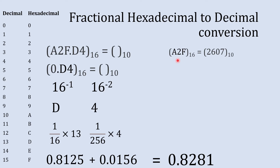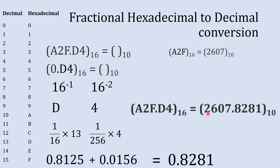Now we add both parts together and the final answer is 2607.8281. That is how you convert a fractional hexadecimal number into its decimal equivalent.